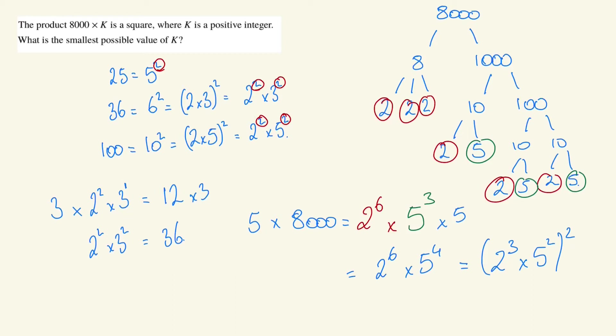If you want to go one step further, 2 cubed is 8, 5 squared is 25, 8 times 25 is 200. So this is 200 squared. So what is the smallest possible value of k here? Well, it's just k equals 5.